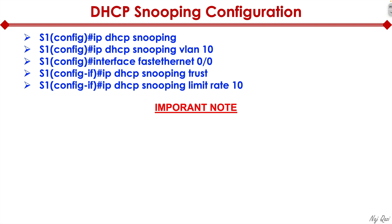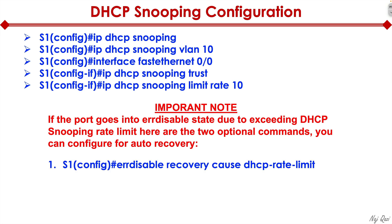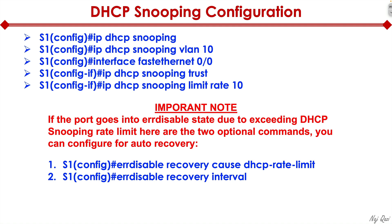An important note: if the port goes into error-disabled state due to exceeding the DHCP snooping rate limit, there are two optional commands for auto recovery. At the global level, type 'errdisable recovery cause dhcp-rate-limit'. You can also define the 'errdisable recovery interval', specifying an amount of time after which the port recovers automatically without any manual intervention from the network operator.